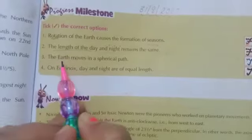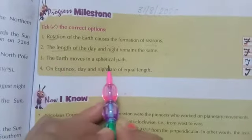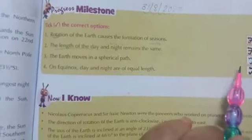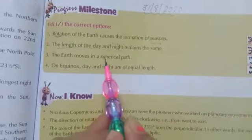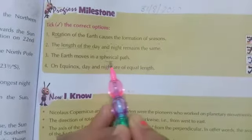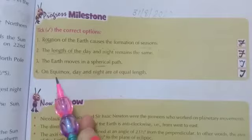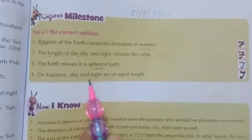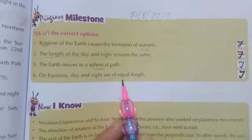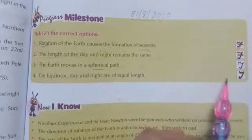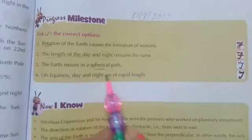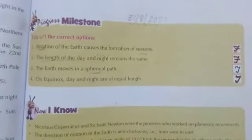The earth moves in a spherical path — True. Earth spherical path mein chakkar lagati hai, True. On equinox, days and nights are equivalent — True. Equinox pe din aur raat ki length equal hoti hai, True.